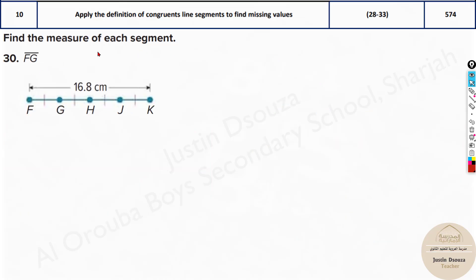Here now we need to find each segment. So over here they have asked us FG but they have told each of these segments are congruent. Can you see this line means they're congruent. All these line segments are congruent.